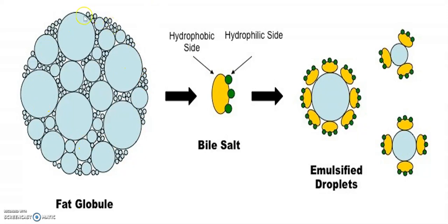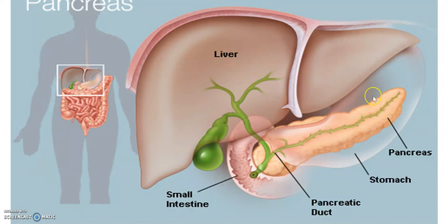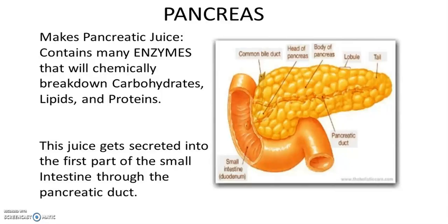To explain emulsification again: a large globule of fat is attacked by the bile salts present in the bile juice, breaking it into small globules with bile salt attached. After that, the pancreas — just below the stomach — secretes pancreatic juice, which is responsible for the digestion of proteins, carbohydrates and fats. The pancreatic juice goes into the small intestine through the pancreatic duct.